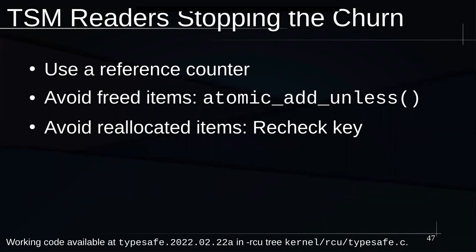One way to stop the churn is to use a reference counter. To avoid freed items, use atomic_add_unless: it does an atomic add unless you have a specified value — in this case zero — so it does an atomic increment unless the value was already zero, in which case it says it couldn't do it. That allows us to reject items that are currently being freed. Of course, it might have been freed then reallocated before we figured out what was going on, so even if we succeed in getting a reference, we also have to recheck the key and make sure it's still the thing we want.